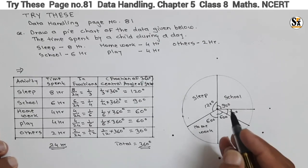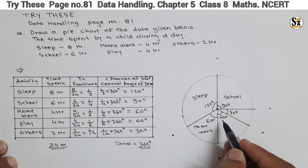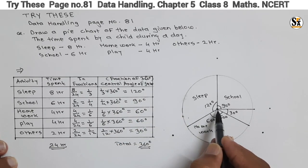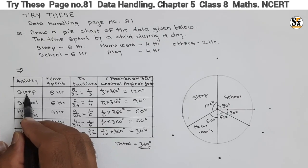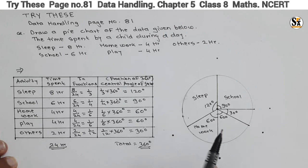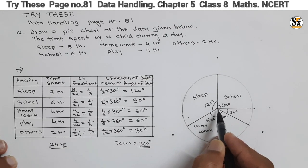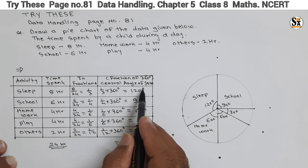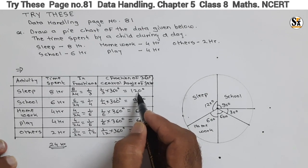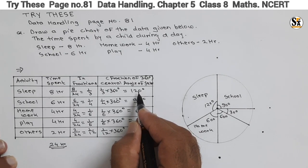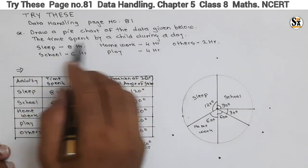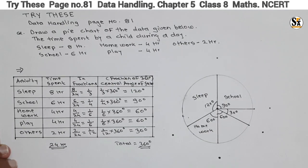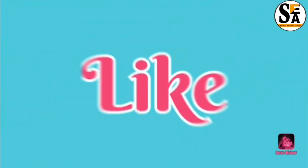In a pie chart, we first draw a circle, then divide it into sectors representing fractions of 360 degrees. The total angle at the center is 360 degrees and each sector represents its corresponding activity or information. We can color each sector with different colors. Thus the data given is represented in the form of a pie chart. This is all for this video — we will meet again in the next video. Do learn, do enjoy. Thank you!